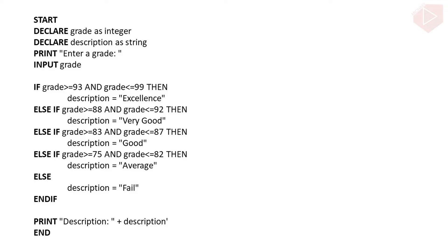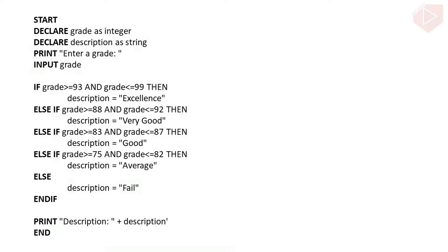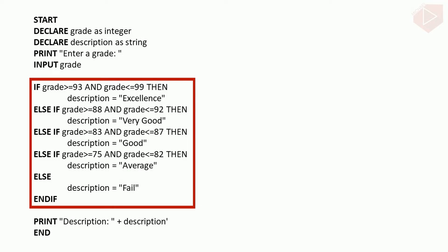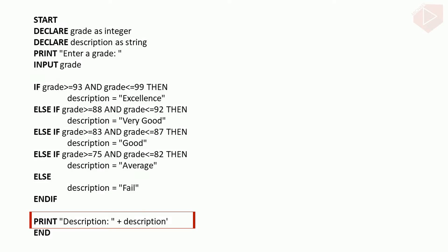This is now our pseudocode for the problem. First is to declare variables — the first variable stores the grade and the second stores the description of the grade. Then print a prompt message. Input the grade. Next is a series of if-else-if statements to identify whether the grade is in the range of excellent, very good, good, average, or fail. Last is to print the description based on the inputted grade.